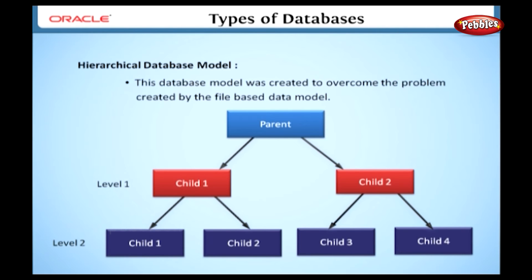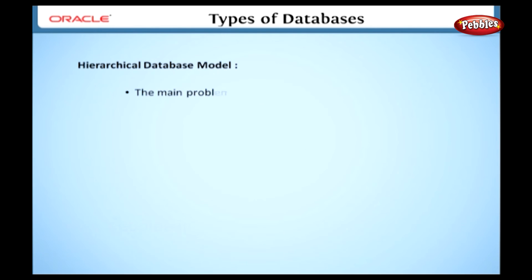In this model, one parent can have many children, but a child can have only one parent. The child databases are all connected to the parent database via links called pointers.